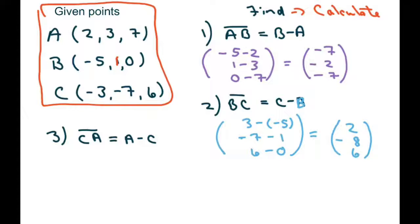And for our last one, we're going to subtract c from a. So that's going to be two minus negative three, three minus negative seven, and seven minus six.